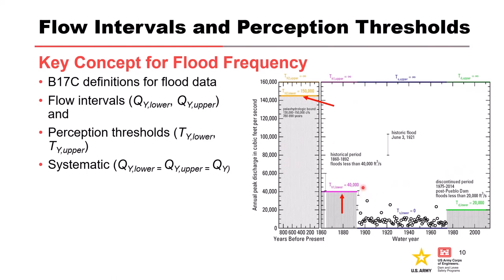In Bulletin 17C, flow intervals are designated by a QY lower and a QY upper based on observations, written records, or physical evidence. We also have rules of thumb if we don't have enough information to quantify uncertainty. Perception thresholds are designated as TY lower and TY upper. Technically, systematic data are interval data as well — just the QY lower equals the QY upper, so it ends up being a single data point.